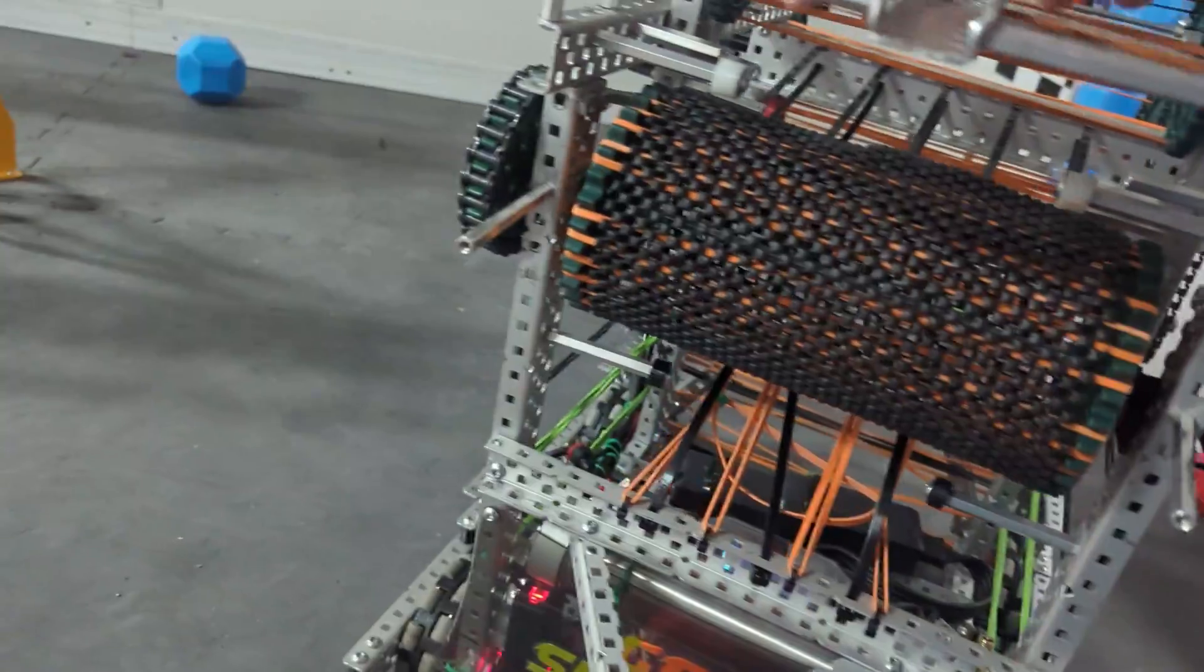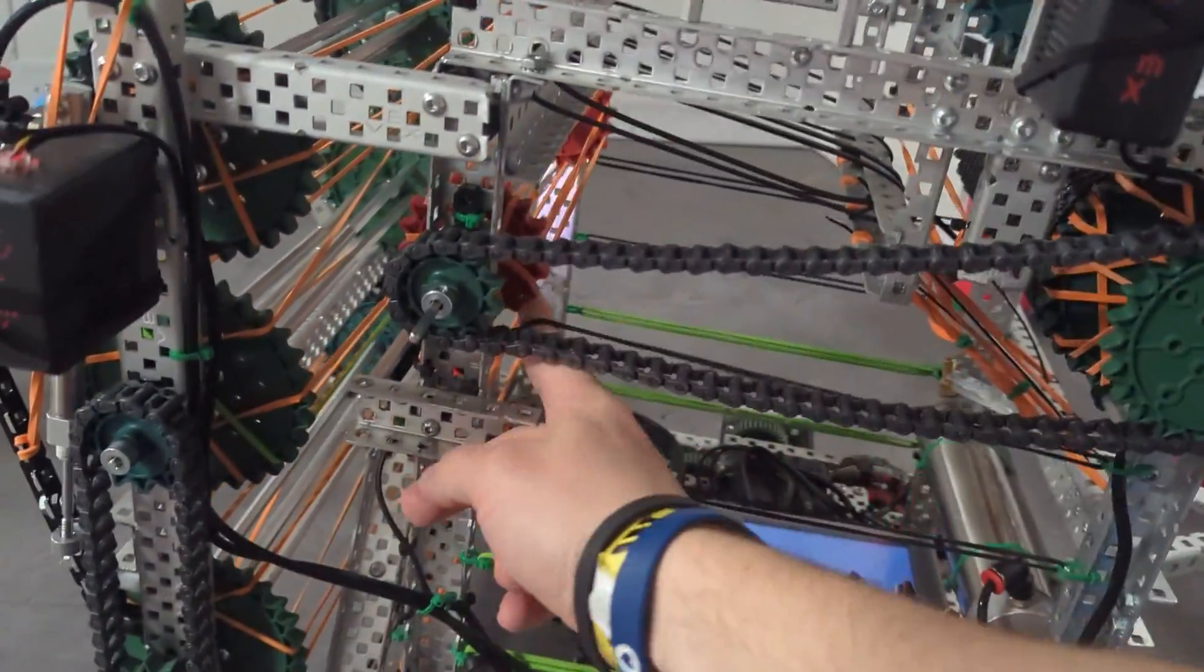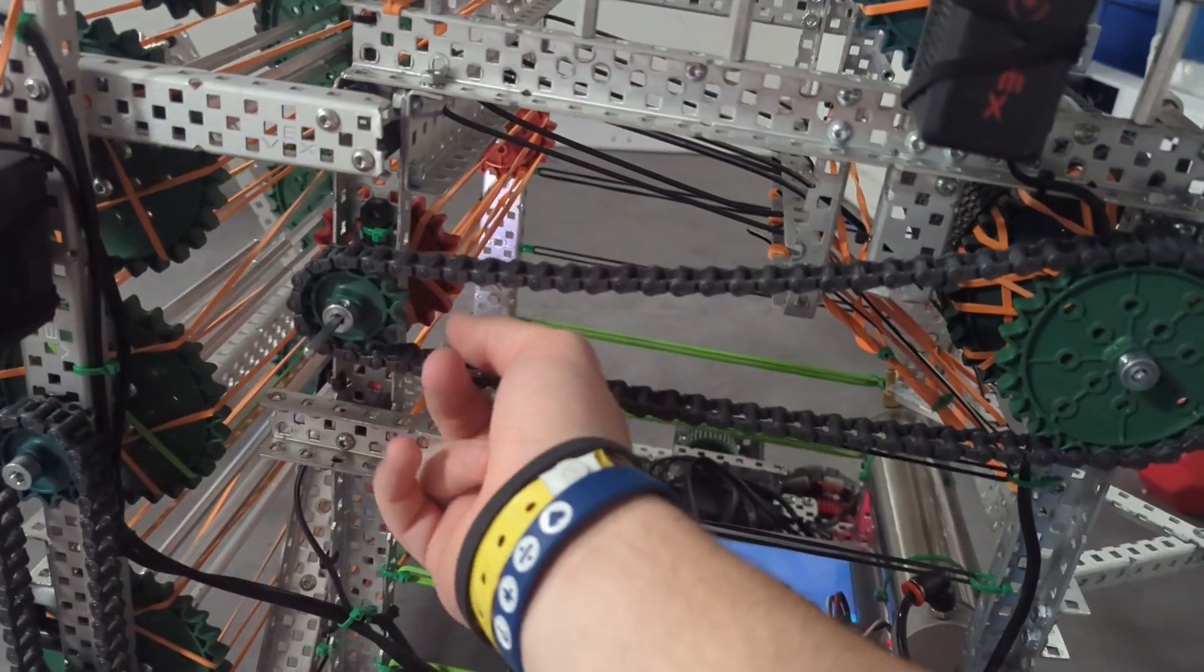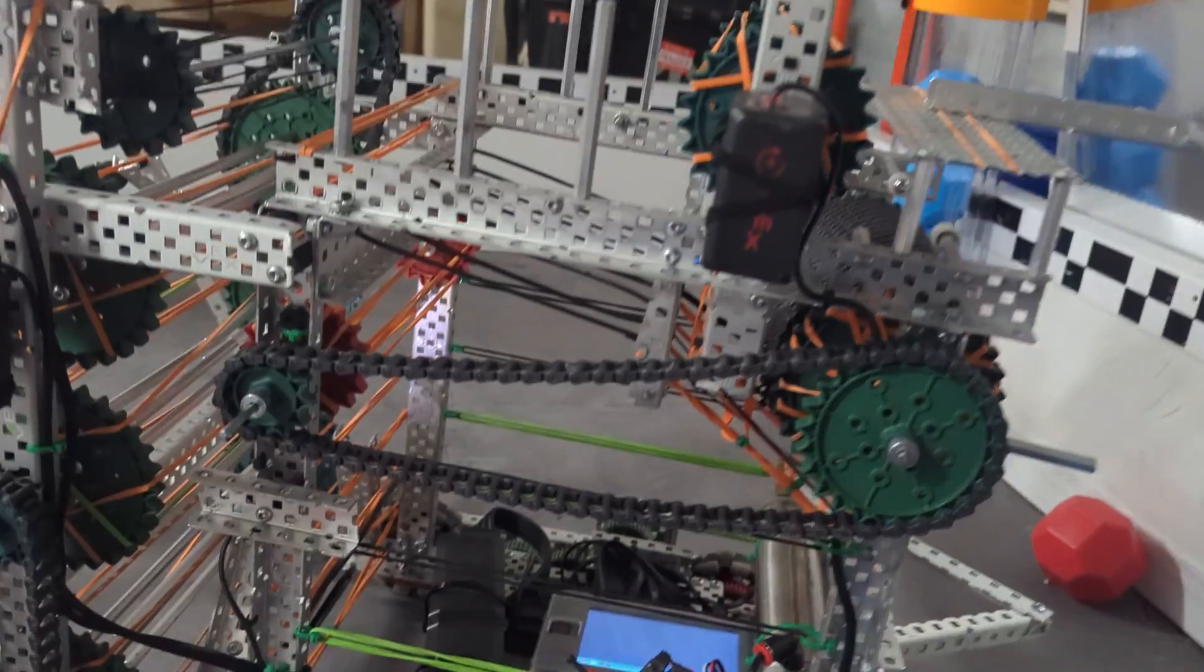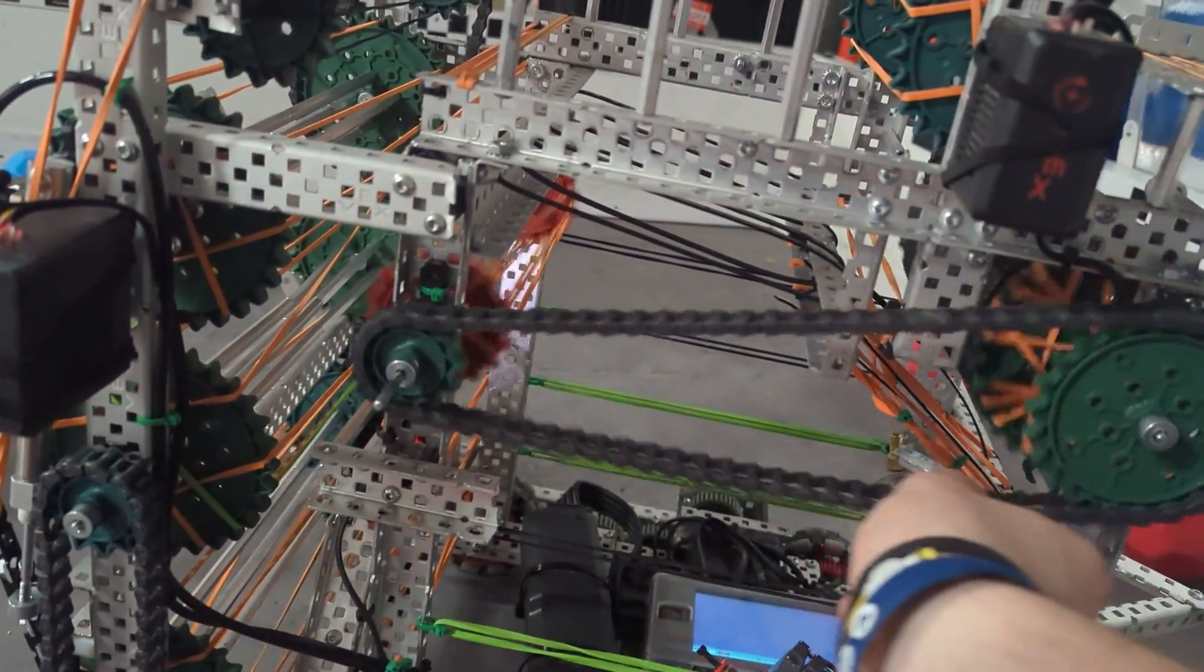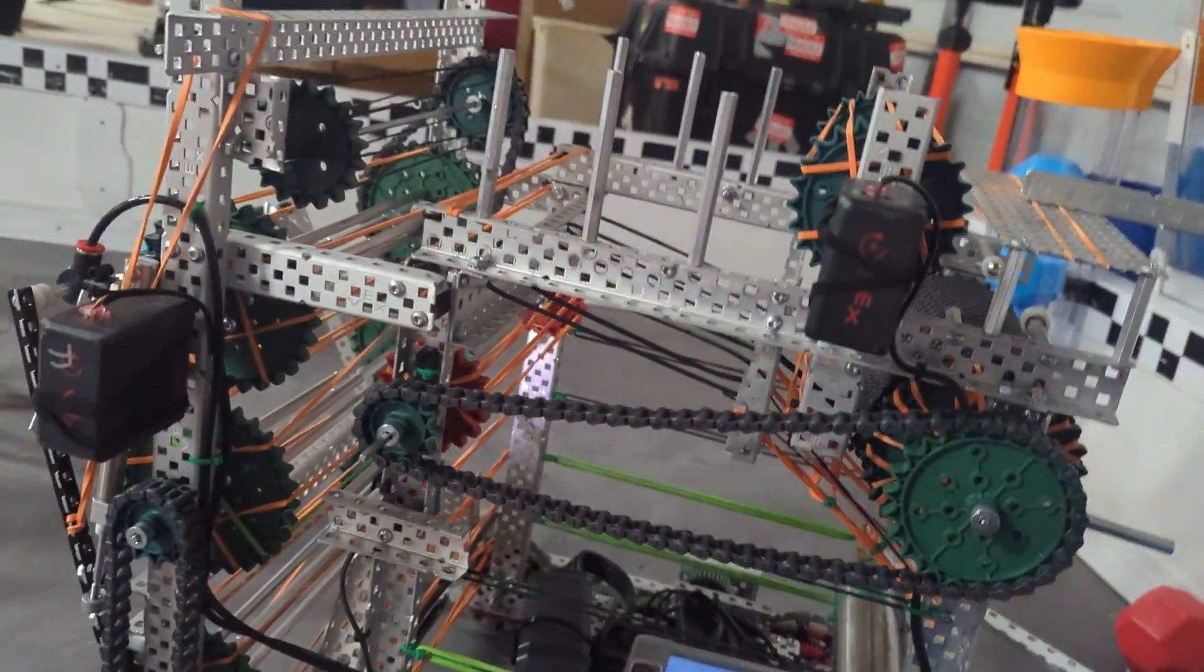This motor is interesting. I've gotten a few questions about this. It's actually linked with chain right here to this color sorting roller right here, and if you haven't seen that, go check out my color sorting video linked in the description. So, these two are linked together, so they spin together.